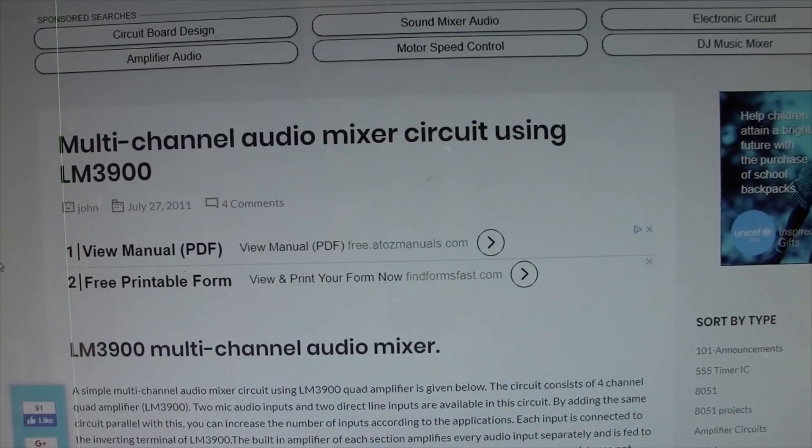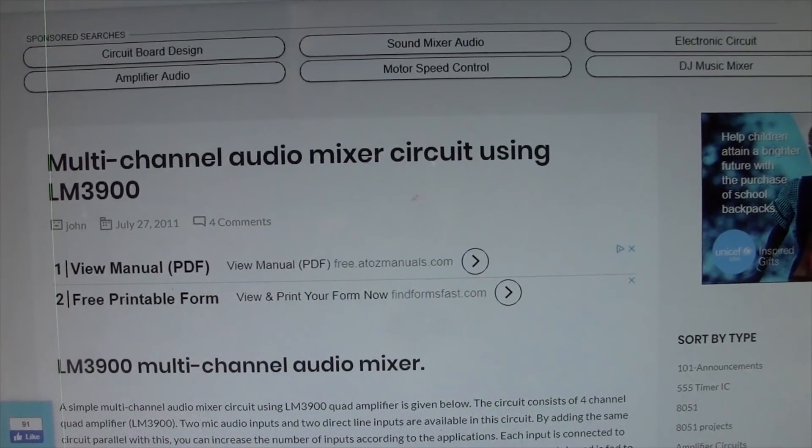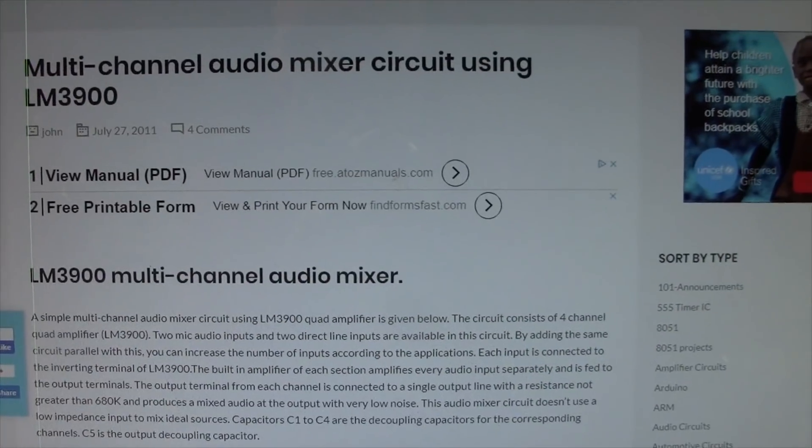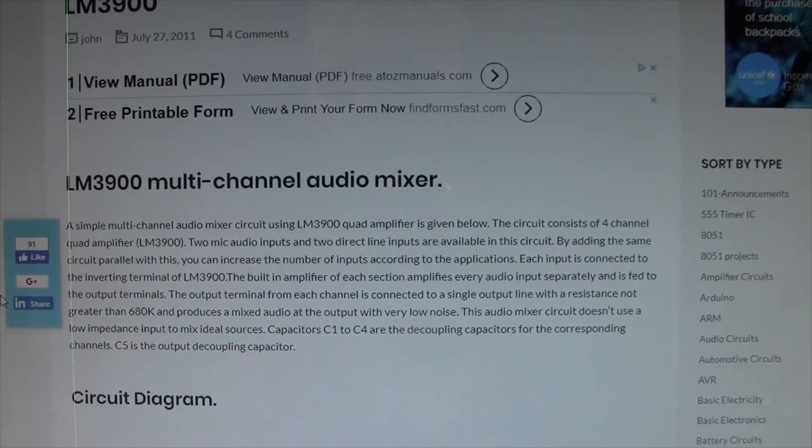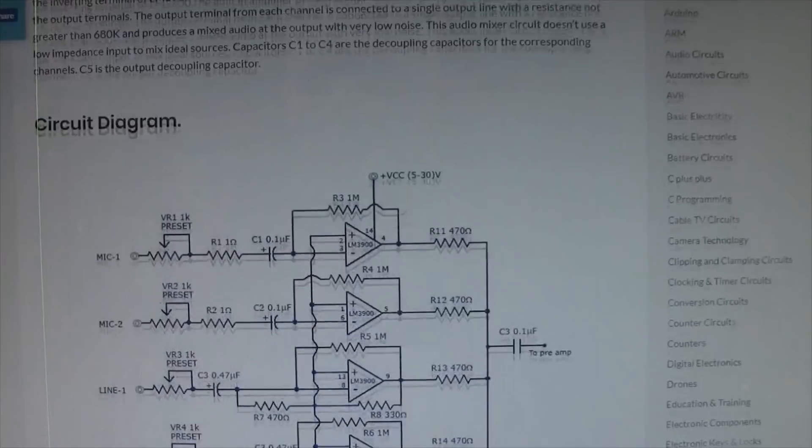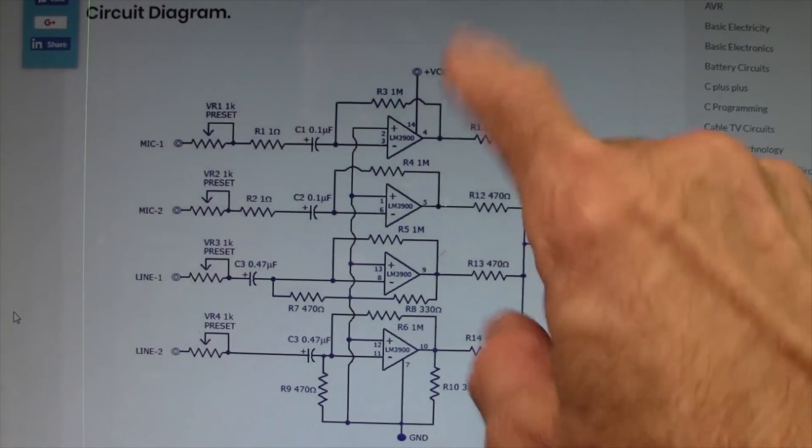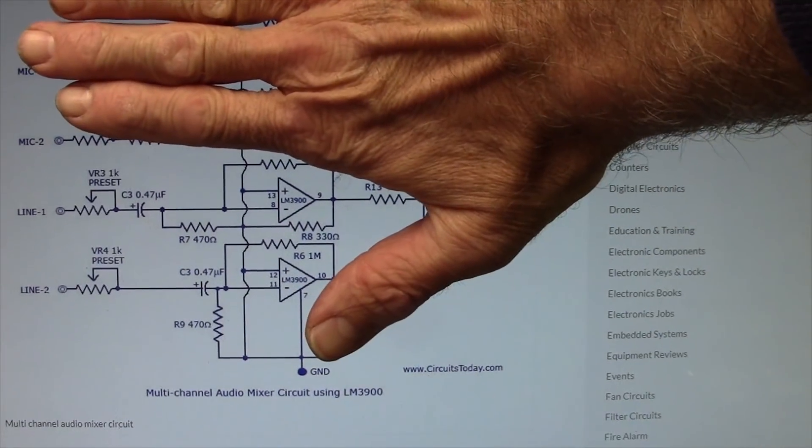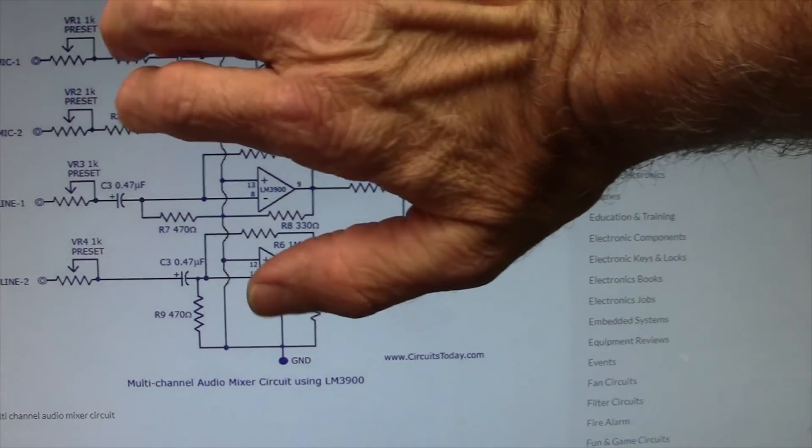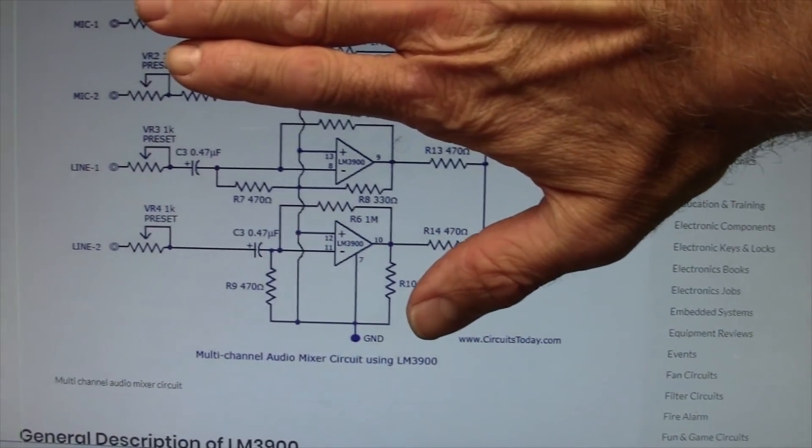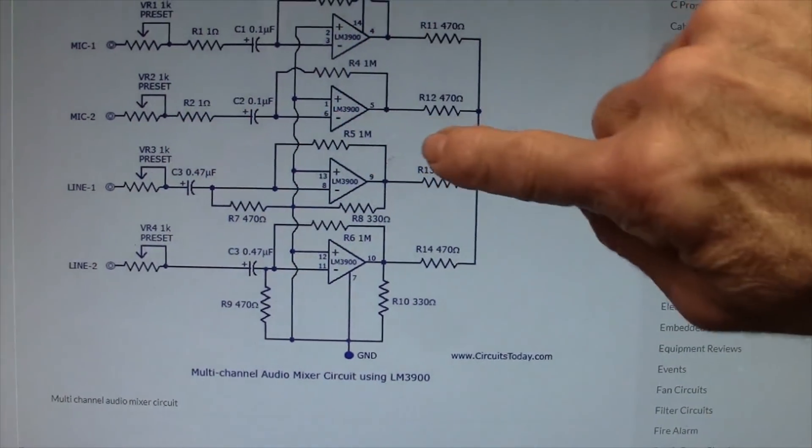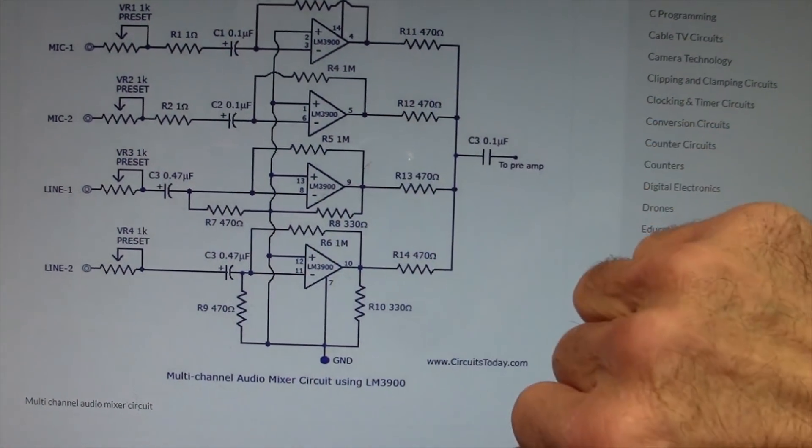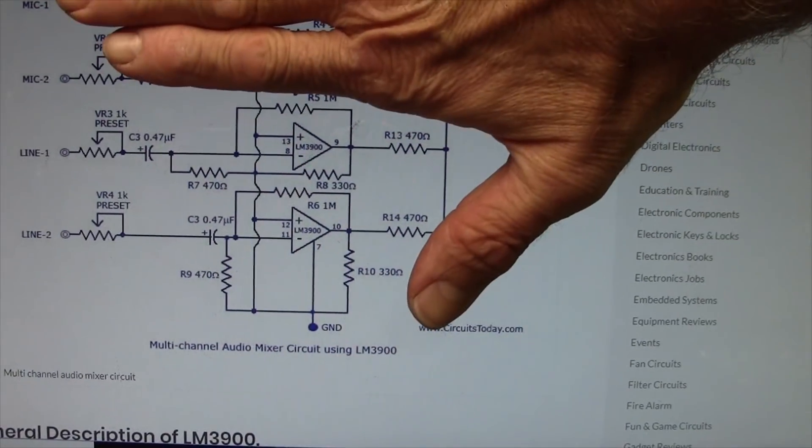So a quick search on the internet's Google and I found a multi-channel audio mixer circuit using the LM3900, which is a quad op-amp well suited to audio applications. This is the schematic. This schematic has two mic inputs, two line inputs. Let's just forget the mic inputs because the impedance is going to be different. I'm just going to use line inputs, and so I'll just be duplicating this part of the circuit twice using all four internal op-amps.